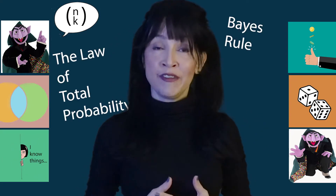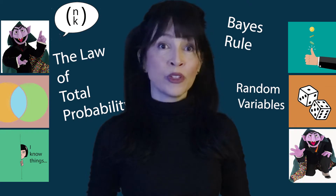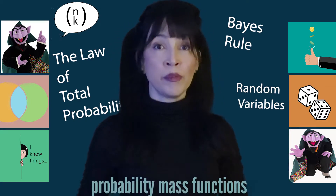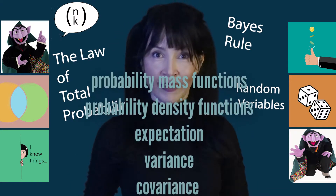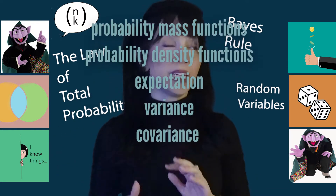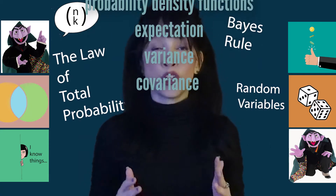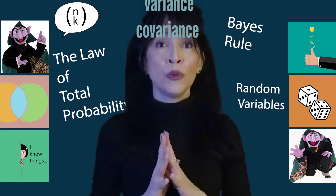Then we're going to define random variables, and we're going to talk about probability mass functions, probability density functions, expectations, variance, and covariance.